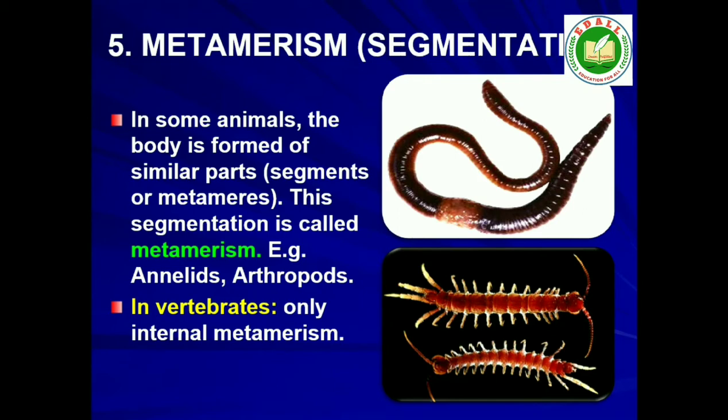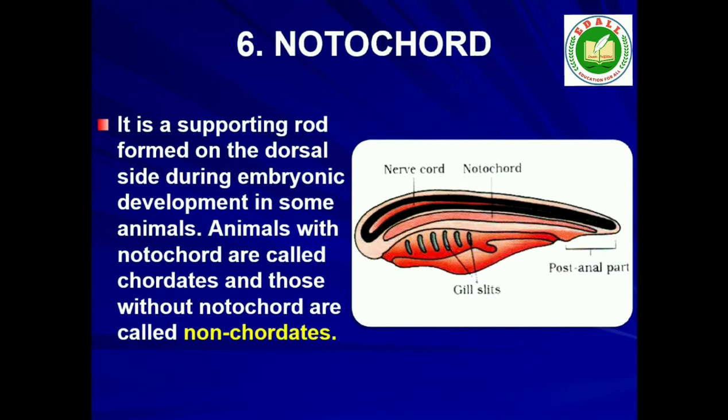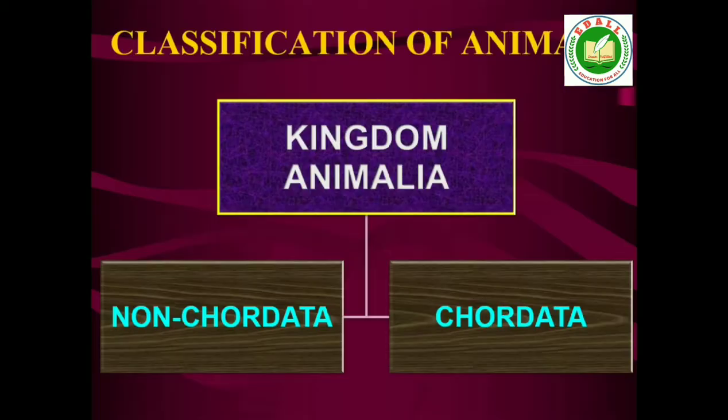6. Notochord. Notochord is a mesodermally derived rod-like structure formed on the dorsal side during embryonic development in some animals. Animals with notochord are called chordates and those animals which do not form this structure are called non-chordates, for example, Porifera to echinoderms.